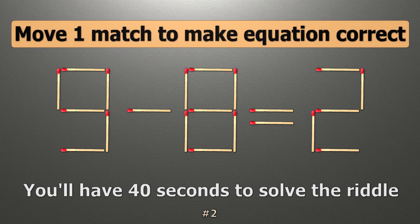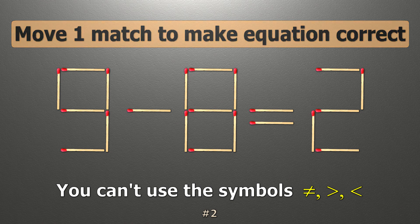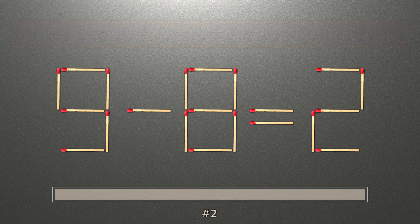We have the equality 9 minus 8 equals 2. Our equality is wrong. We need to move one match to make our equality correct.